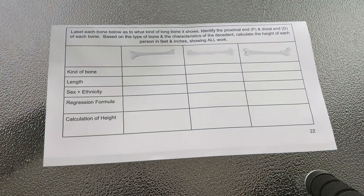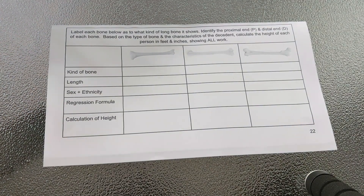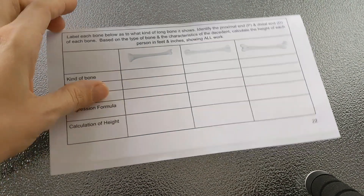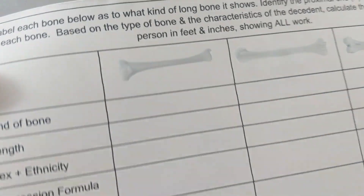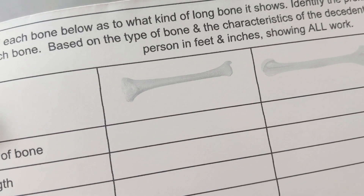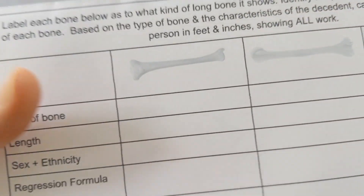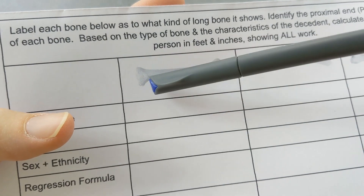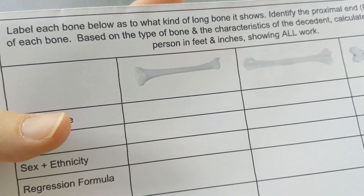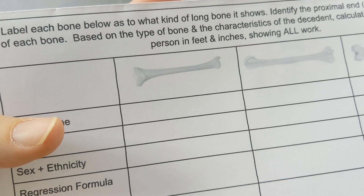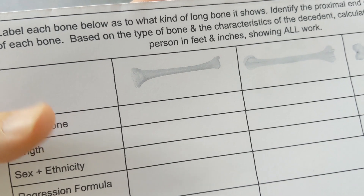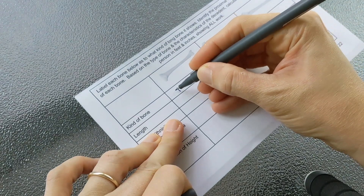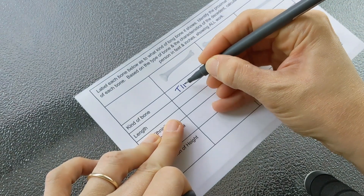The first step to determining height from a long bone is to figure out what kind of bone you're looking at. On the handout, there are pictures of different kinds of bones. The distinguishing feature of the first one is that it is really wide on one end but kind of flat. That bone is a tibia.